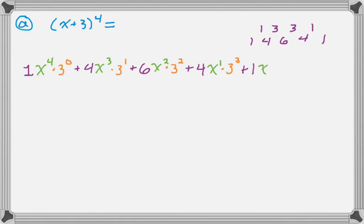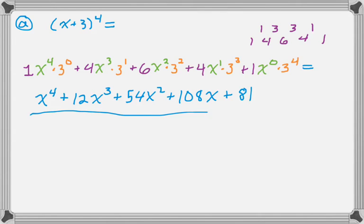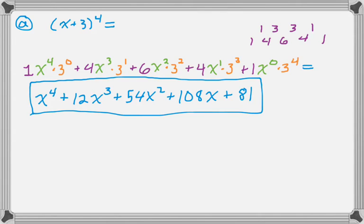And then it'll be 1, x to the 0, and 3 to the 4th. And then we can just work that out and multiply everything together. So we get that. Alright, let's try another one.